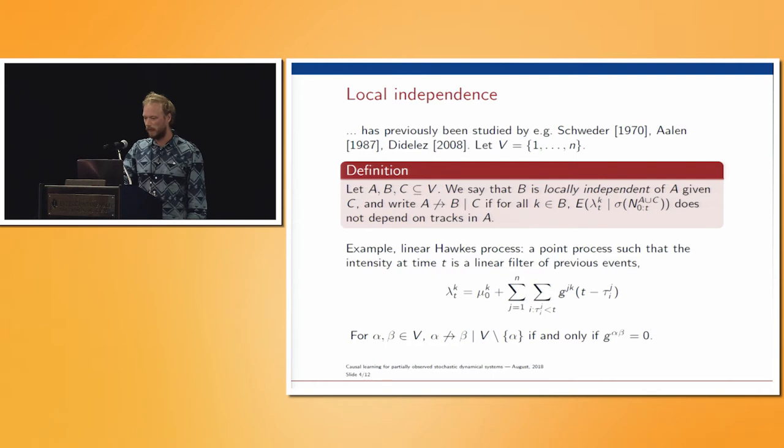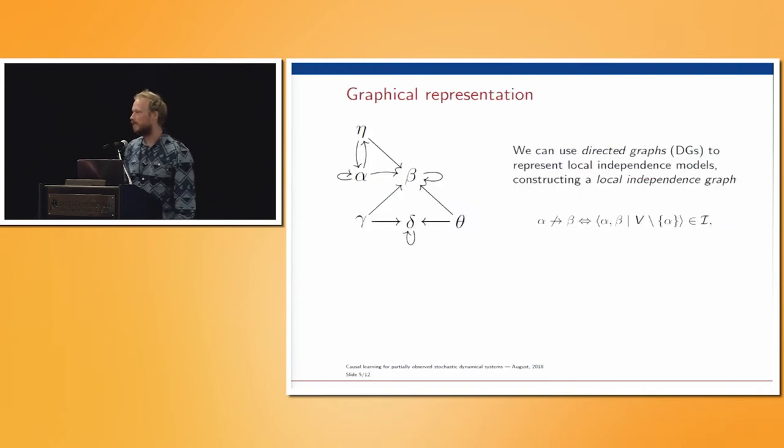All right. I want some kind of graphical representation of this, so in the end I can learn a graph which represents this local independence structure. The way to do this, or one way to do this, is to use these directed graphs. A directed graph is just one that has only directed edges. There could be loops, there could be cycles. We can construct a local independence graph in this way: I just exclude the edge from alpha to beta if and only if I have this local independence of beta from alpha given everything but alpha.